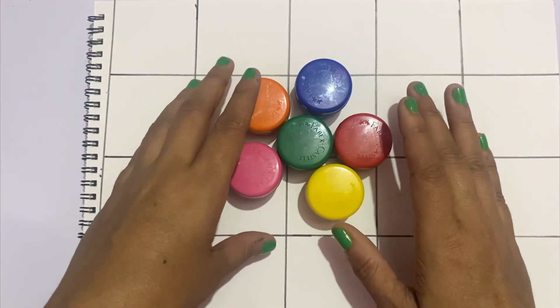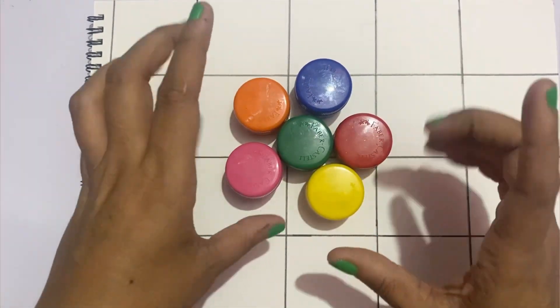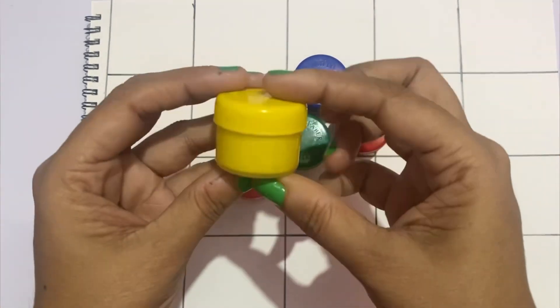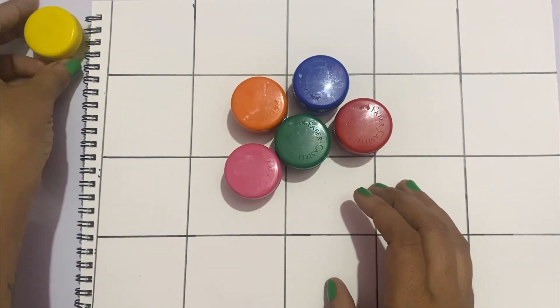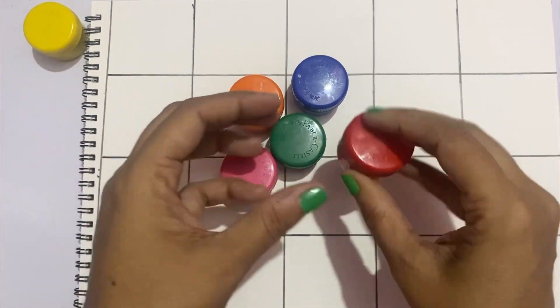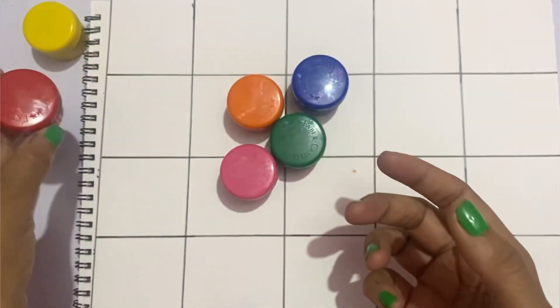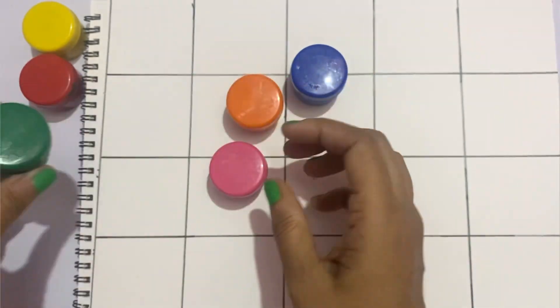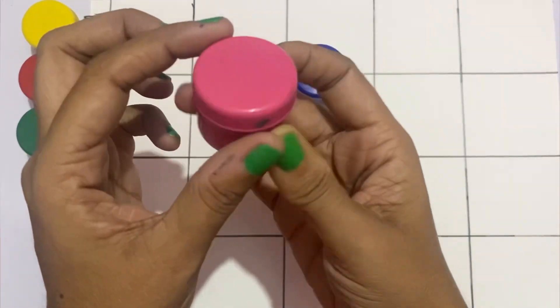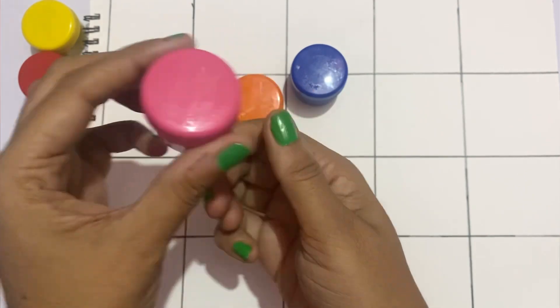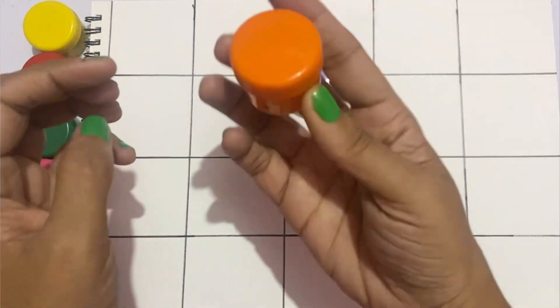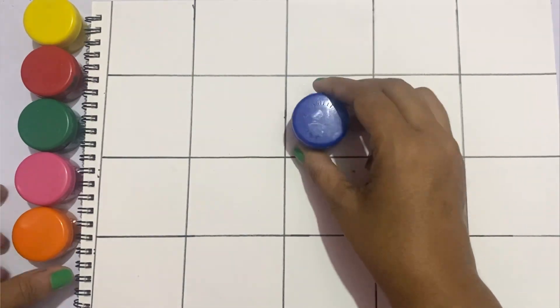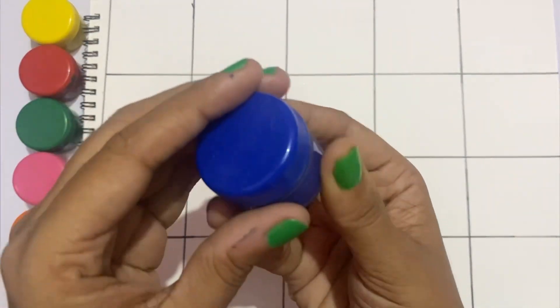Hello kiddos, let's learn numbers with the help of different colors. So let's learn color names: yellow color, red color, green color, pink color, orange color, blue color.